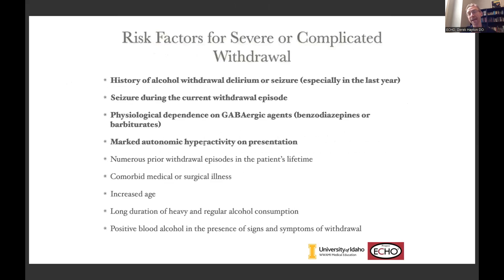There are also individual risk factors to consider. If you do the PAWSS or Lubeck and it comes back seemingly low risk, you still want to ask: have they had alcohol withdrawal delirium or seizures, especially in the last year? If someone otherwise appears low risk but says they were in the ICU with delirium three months ago, they probably should not be treated as an outpatient. If they had a seizure this morning, they should not be treated as an outpatient. If they're on other GABAergic medications like benzodiazepines or opioids, that's pretty complicated. Autonomic instability, hypertension, or tachycardia might also warrant a higher level of care.